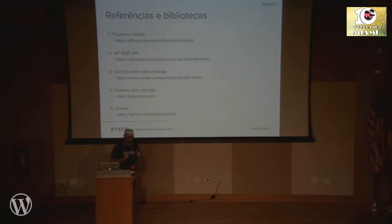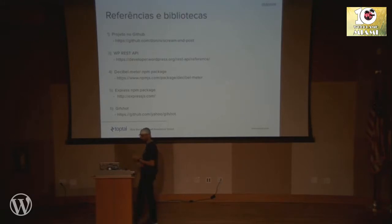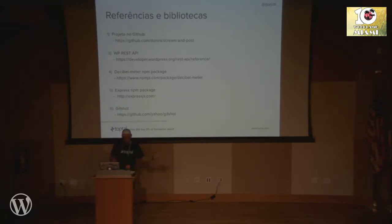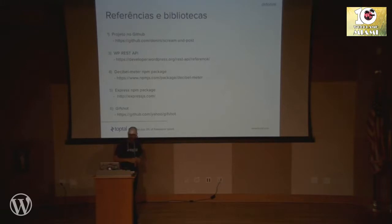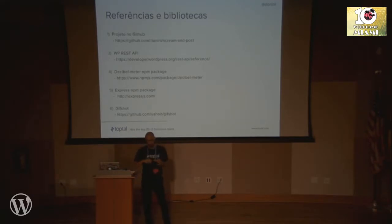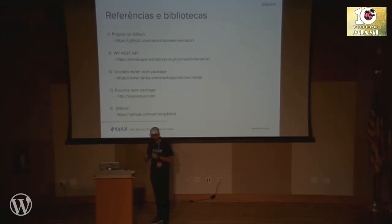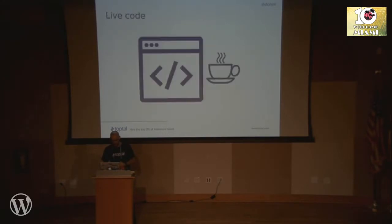Here are the references and libraries I used to build this project. The project is on GitHub on my profile — that's the first link. I used the WordPress REST API, the decibel meter package, the Express NPM package to run a local server on the Raspberry Pi, and GIFshot — a JavaScript framework that captures pictures from the camera and creates a small GIF.